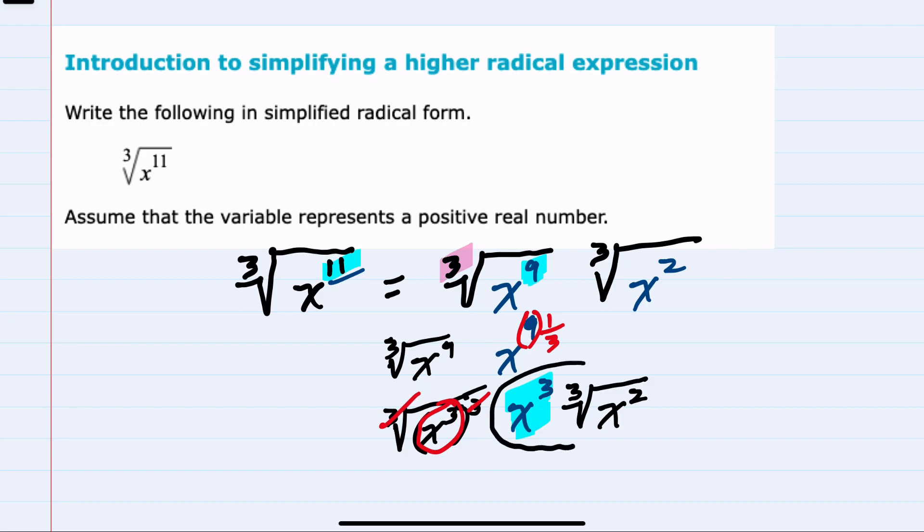So we've brought out x to the 3rd power. We're left with x to the 2nd power still under the radical for the cube root.